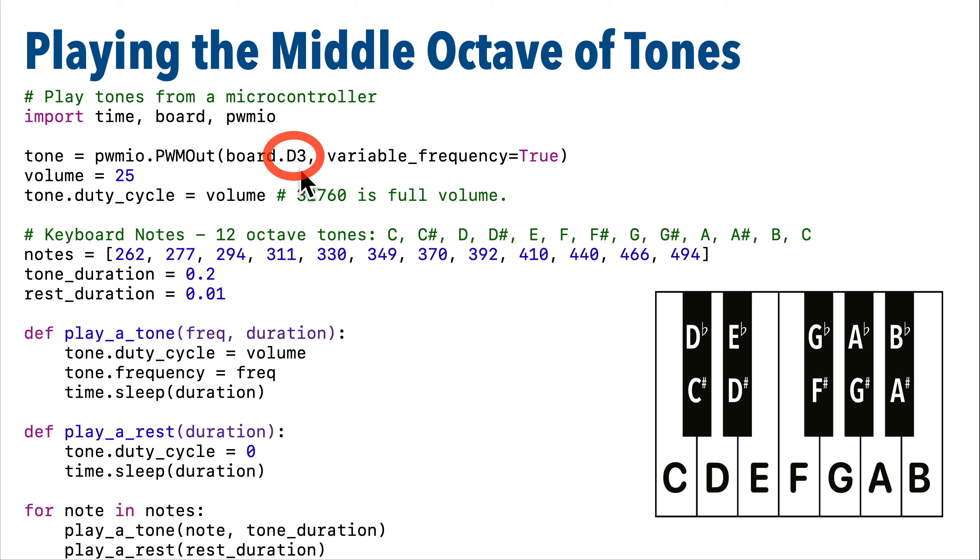Now the way that we play tones is to change the frequency of our PWM out object, and different frequencies mean different notes. In order to be able to vary the frequency of this object, when we declare this object we need to set the variable_frequency parameter equal to true. And unfortunately there's no way to control the speaker volume from CircuitPython, but we can fake this by accessing and changing the PWM out object's duty_cycle parameter.